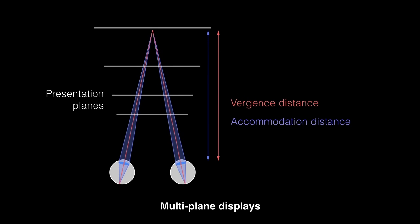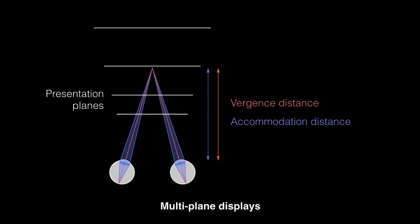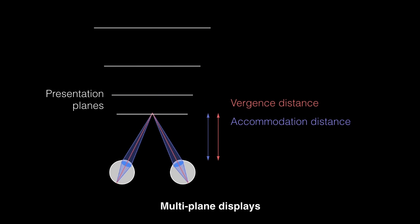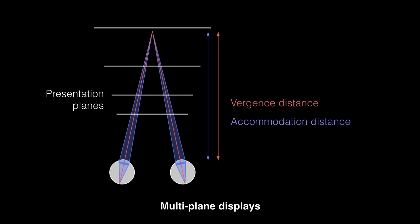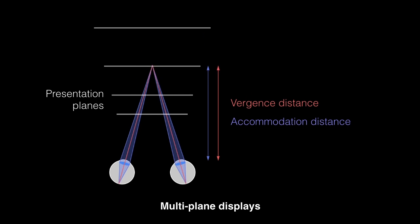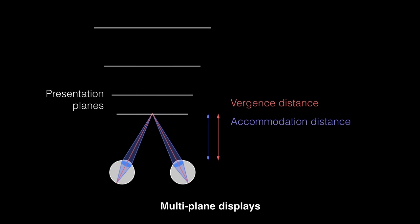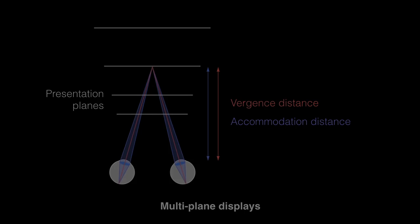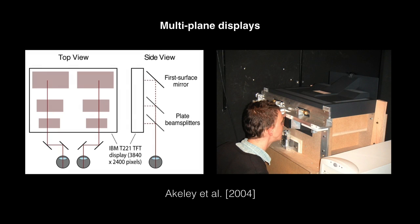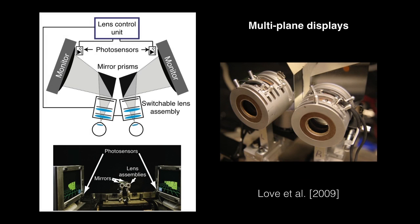Multi-plane displays provide a potential solution to this problem, presenting images at multiple distances that combine additively in the eye. By assigning image data to different planes, a range of accommodative distances can be achieved. Such displays have been constructed using a system of beam splitters, or using high-speed switchable lenses with time multiplexing to change the apparent distance of the monitor.